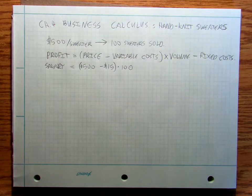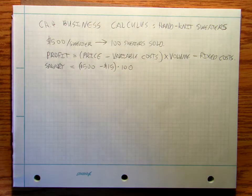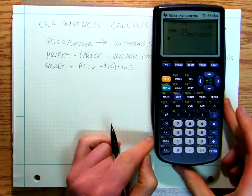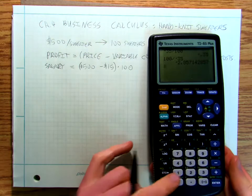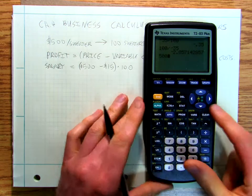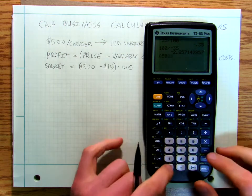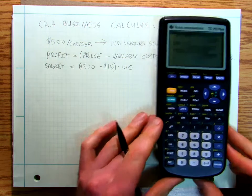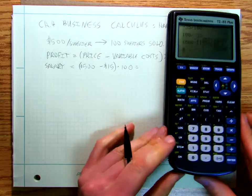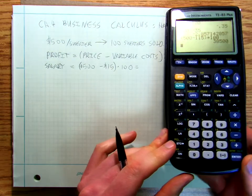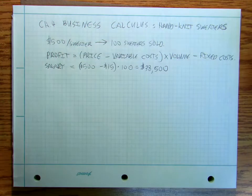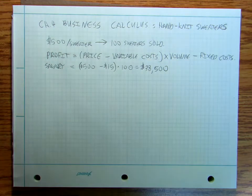So let me grab my calculator. It's going to be 500 minus 115 times 100 and you make your salary for that is going to be $38,500. So that's your yearly salary, you make about $38,000, $39,000 a year.